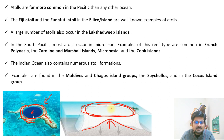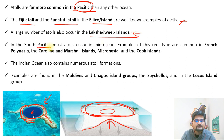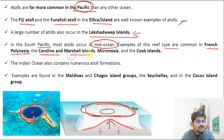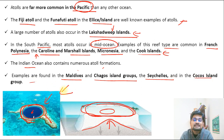Atolls are far more common in the Pacific than any other ocean. Examples include Fiji and Funafuti atoll or Ellis Island. In the Indian Ocean, the Lakshadweep Islands are the most famous example. In the southern Pacific mid-ocean zone, examples are common in French Polynesia, Caroline Islands, Marshall Islands, Micronesia, and Cook Islands. In the Indian Ocean: Maldives, Chagos Islands, Seychelles, and Cocos Island are all part of atoll formations.